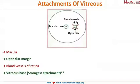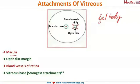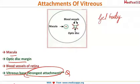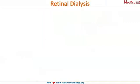The vitreous is a gel-like body that must be attached to stay in the posterior segment. It is attached to the macula, the optic disc margin, the blood vessels of the retina, and the vitreous base. The strongest attachment of the vitreous is at the vitreous base.